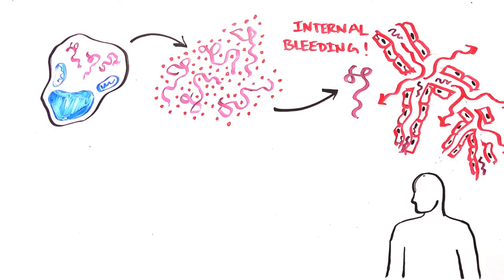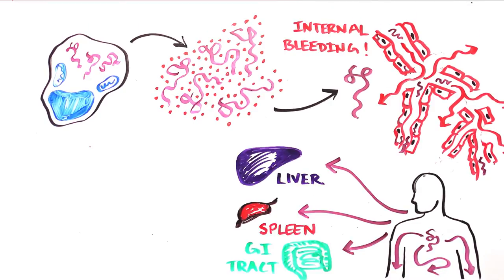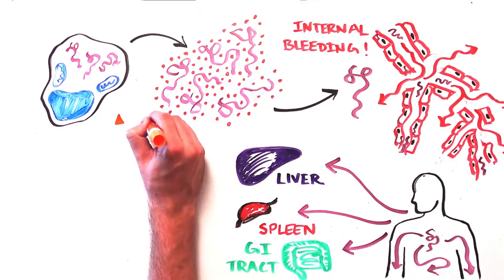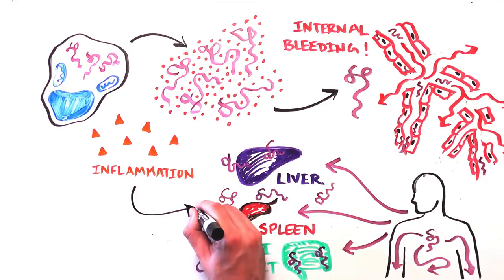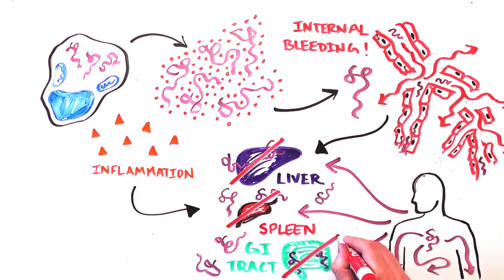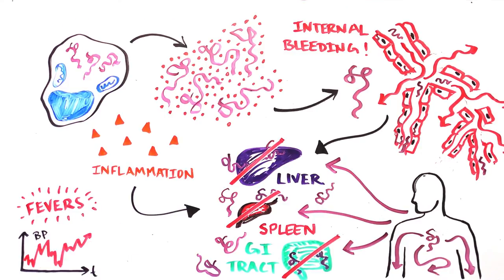This gives the virus an opportunity to travel in the blood to other sites in the body, usually the liver, spleen, and digestive tract. There it infects even more immune and blood vessel cells, which in combination with the inflammation and damaged blood vessels leads to loss of organ function, fevers, and blood pressure instability and shock.